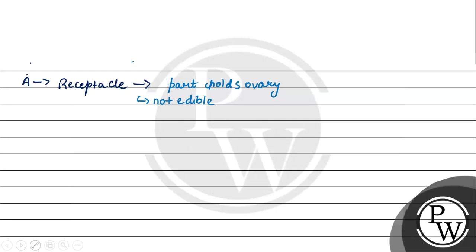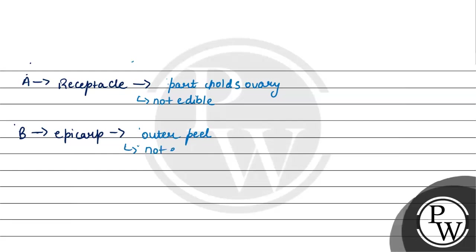The next option is option B, which is epicarp. Epicarp is the outermost layer of the pericarp, and in mango this layer is the outer peel — the छिलका — which we remove, therefore it is not the edible part of mango.